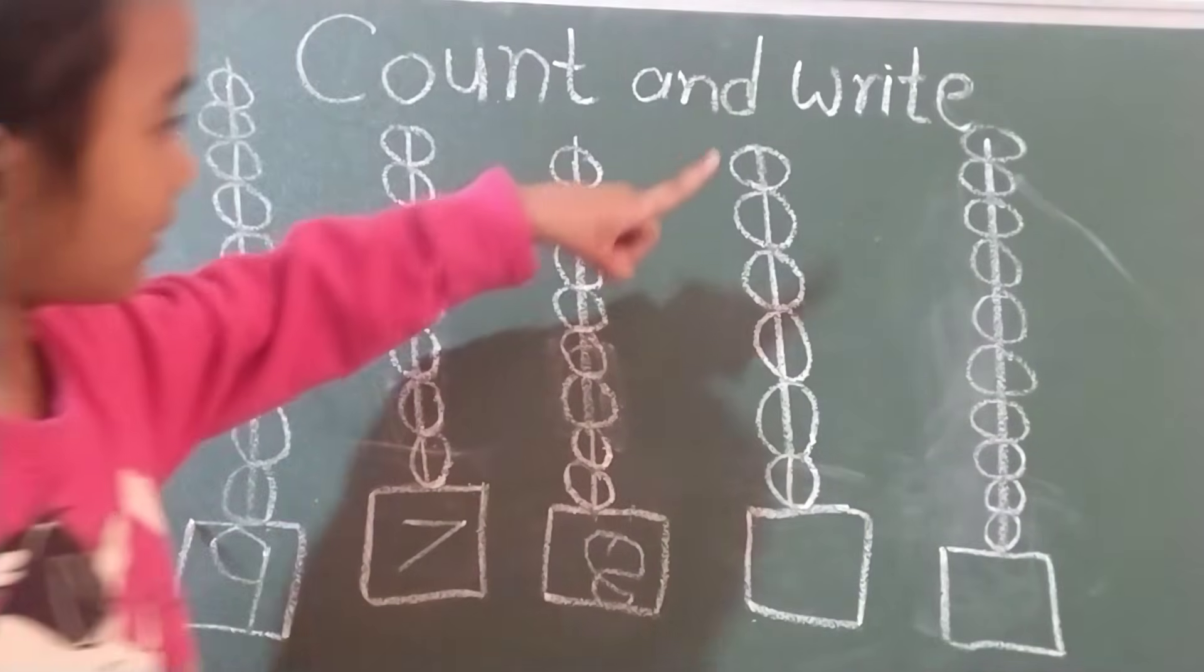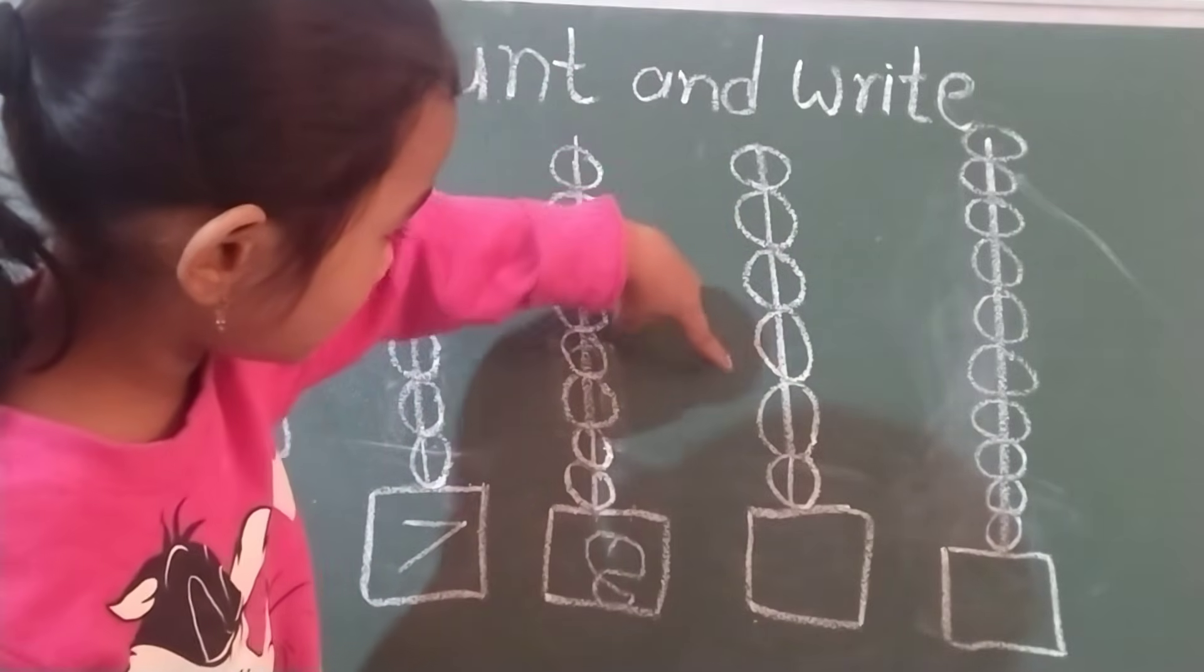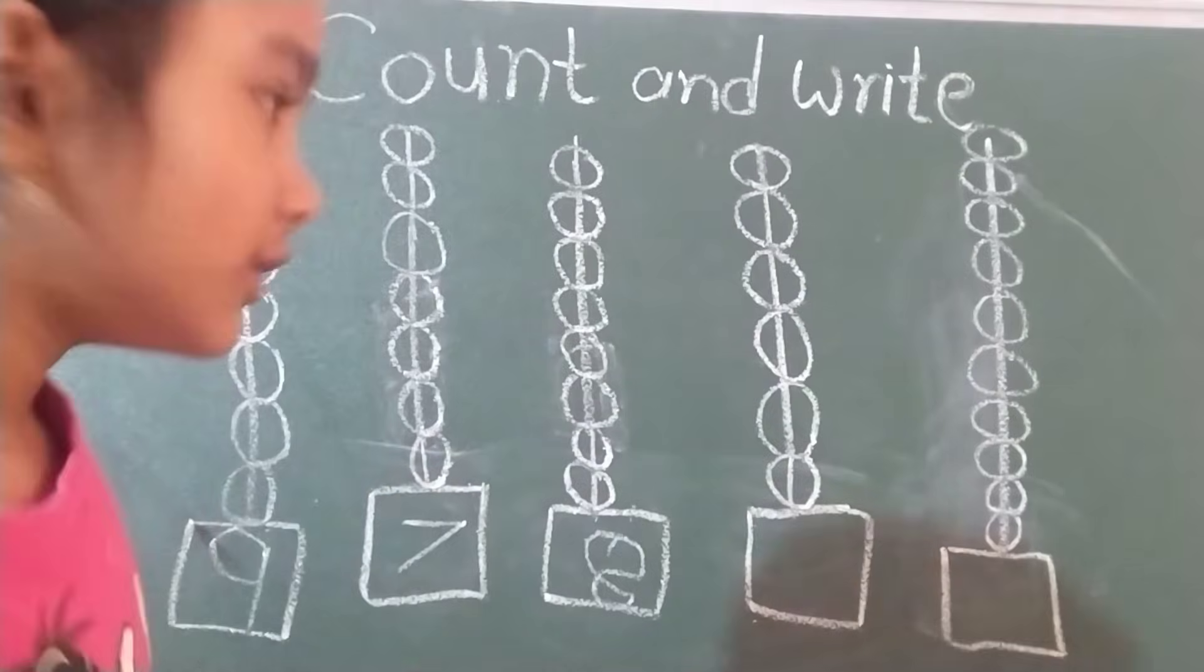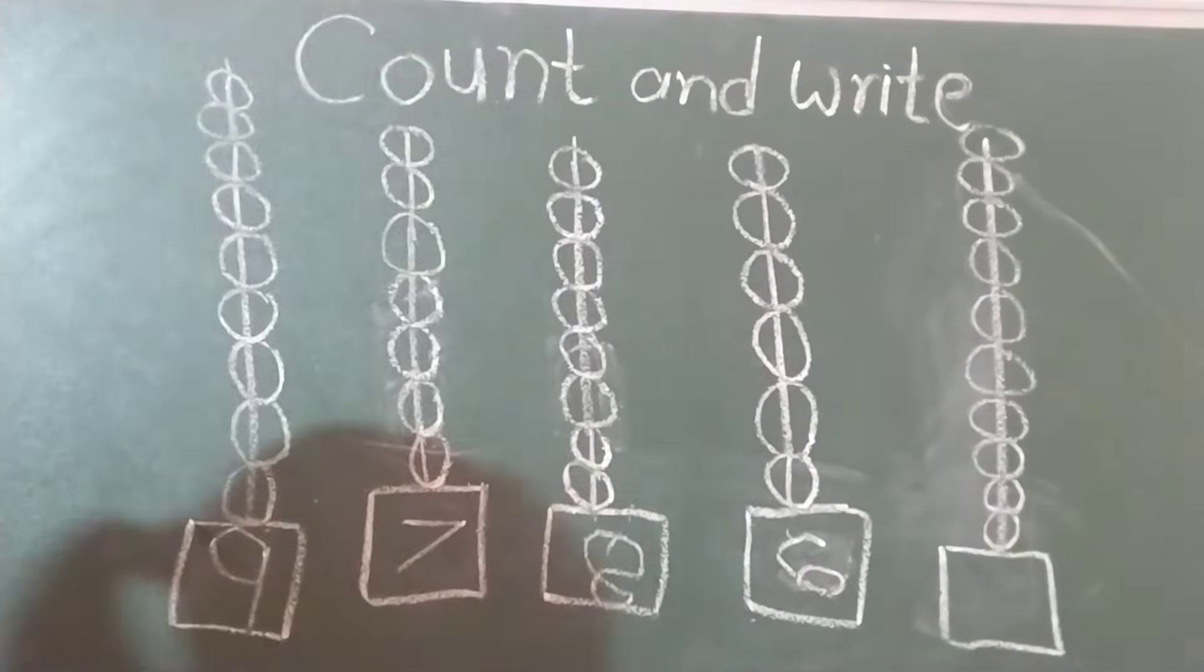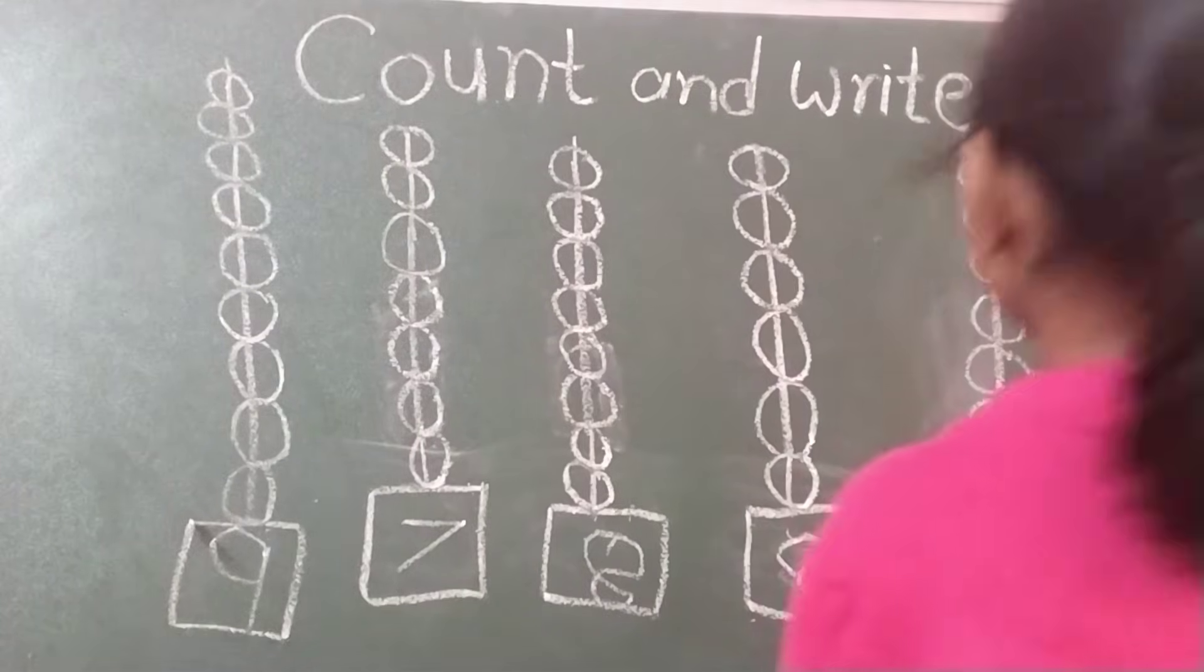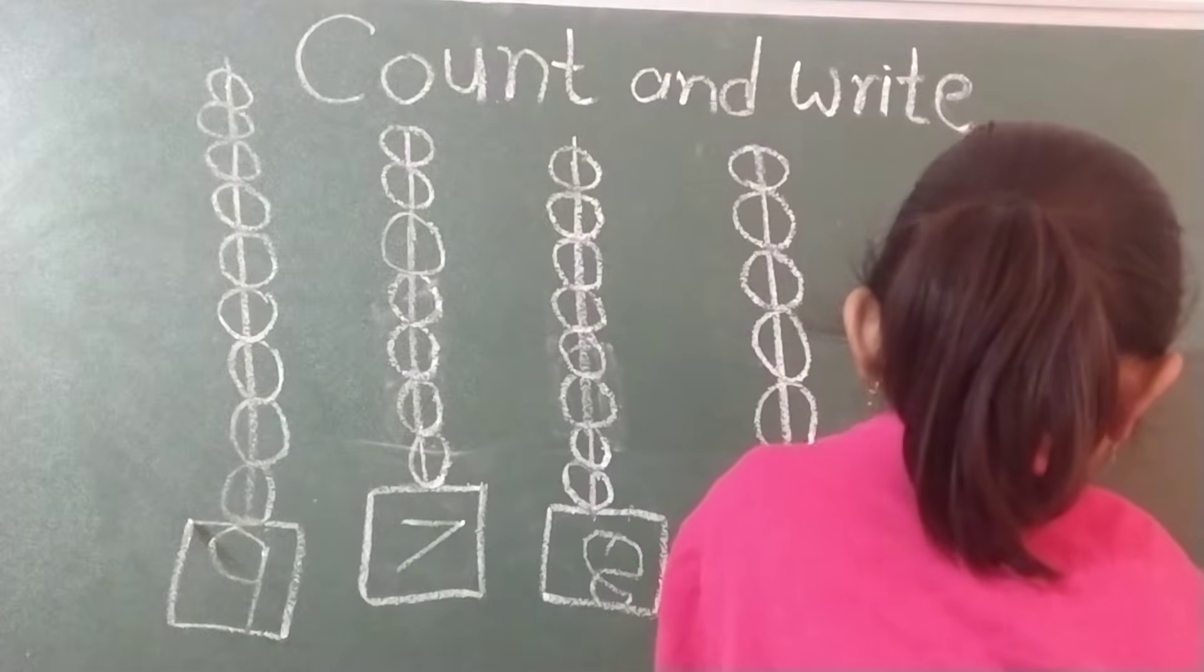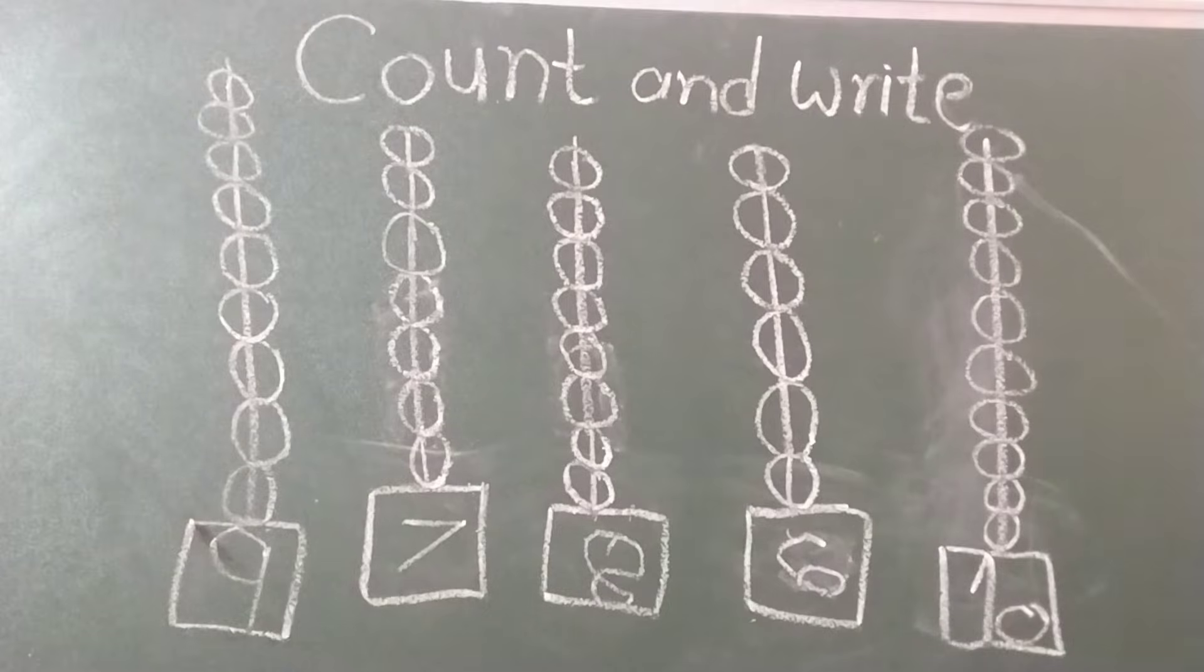Say loudly. Count loudly. One, two, three, four, five, six. How to write six? Forgot you. Loudly. One, two, three, four, five, six, seven, eight, nine, ten. Ten. One, zero, ten. One, zero, ten.